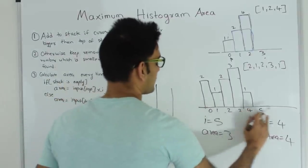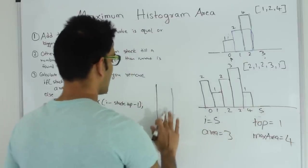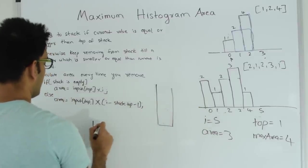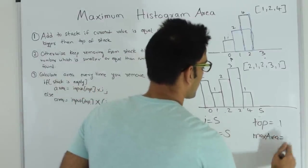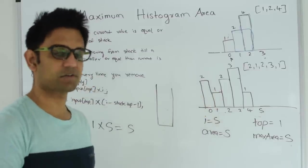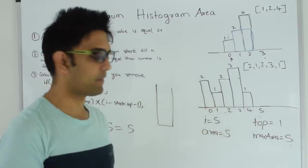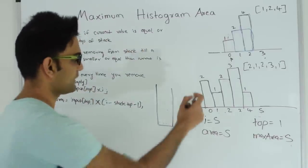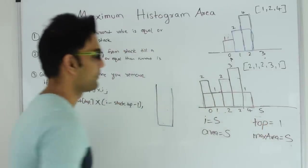Finally, top becomes 1 and the stack is empty. Since the stack is empty, area = input[top] × i = 1 × 5 = 5. Area becomes 5, which is greater than max area, so max area becomes 5. Since this was the last element in the stack, this number is the smallest in the entire array, so we multiply by the length of the array. Max area for this example is 5, and that is the rectangle which gives the maximum area.